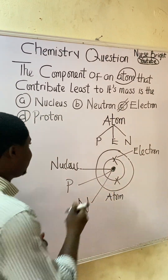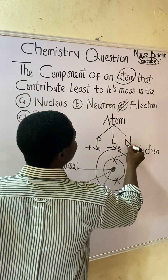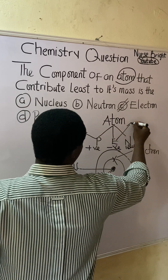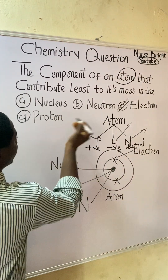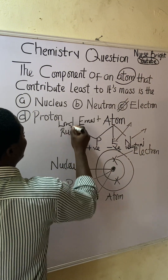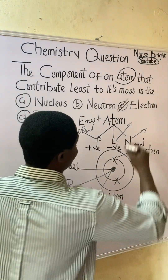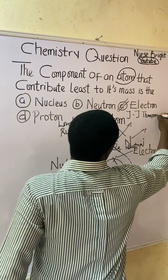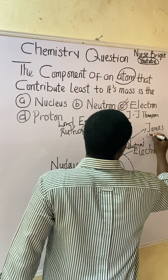Protons are positively charged, electrons are negatively charged, and neutrons are neutral. They were discovered by different scientists. Protons were discovered by Lord Ernest Rutherford. Electrons were discovered by J.J. Thompson. And neutrons were discovered by James Chadwick. All these must be noted.